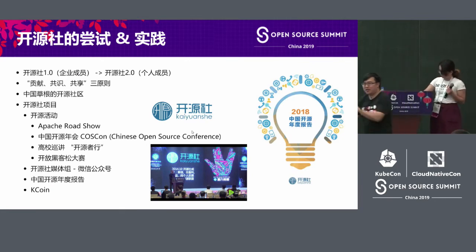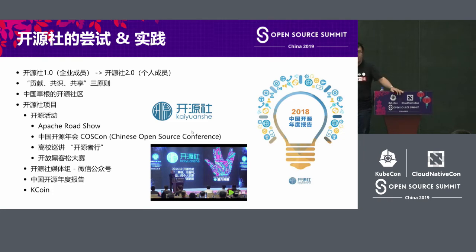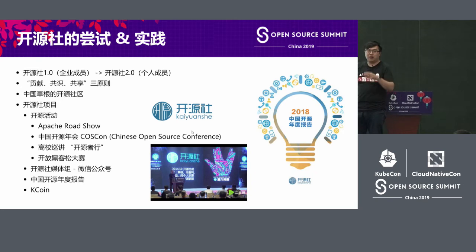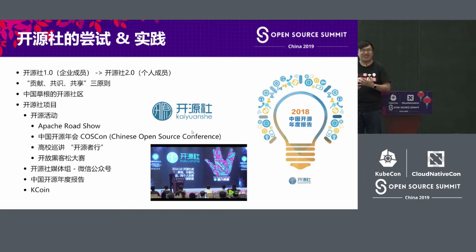I want to talk about the open source community in Chinese mainland. The Taiwan open source community has been doing things for many years but they are not well known in mainland. Kaiyuan She is a platform for all of us to join so that we can connect open source people and they can do something together. For example, the Apache Roadshow in 2015 was the first time Apache Foundation came to China — we as Kaiyuan She worked and collaborated with them. At that time, lots of Apache projects were introduced to China, and we sort of became a partner of Apache.